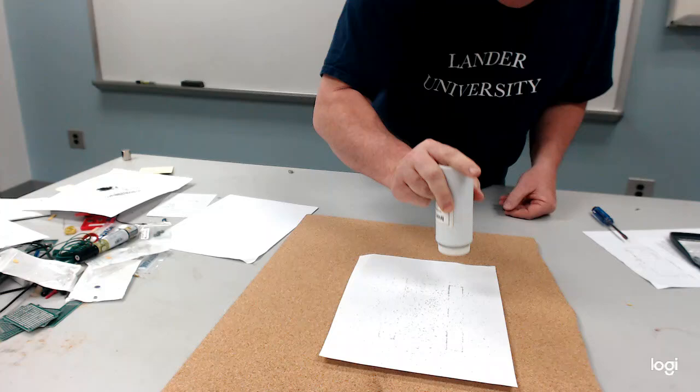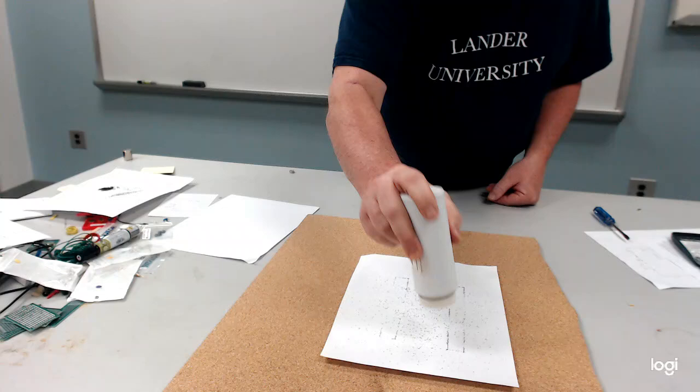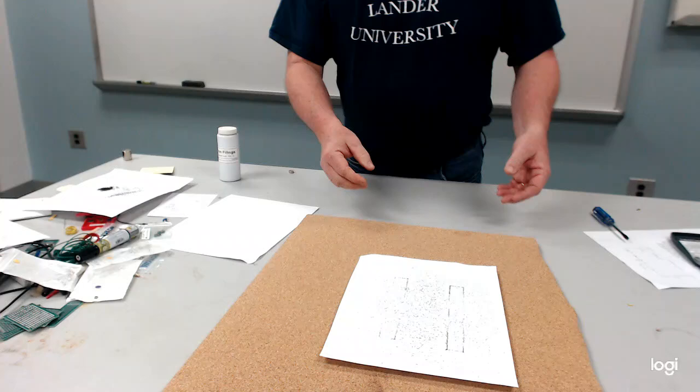What you can start to see is you'll see the filings gathering on those magnets but you'll see the magnetic field lines that are between the two poles of each of the magnets, going between them, in between them.